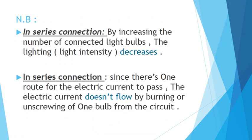Here is an important note. In series connection, by increasing the number of connected light bulbs, the lighting or the light intensity decreases. Why? Because in series connection the lamps are connected in only one route, one wire, one path. The electricity coming from the source moves through this one route and is divided by the number of lamps. As that number increases, the electricity going to each lamp decreases, and that's why the light intensity or light strength decreases.